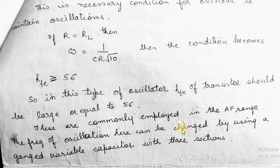The frequency of oscillation can be changed by using a gang variable capacitor with three sections, so that it provides the same capacitance in all three sections when changed. This is how a basic phase shift oscillator behaves. In this phase shift oscillator, the 180 degree phase difference is achieved by the common emitter amplifier configuration, and the remaining 180 degree phase shift is obtained by the three RC networks. Next, we will be discussing the Wien bridge oscillator in the next lecture. Thank you.